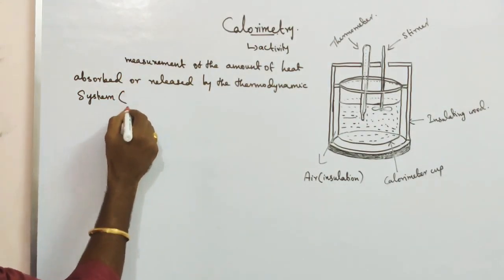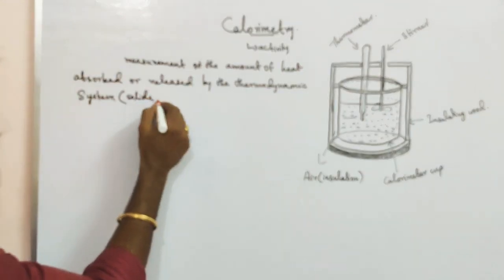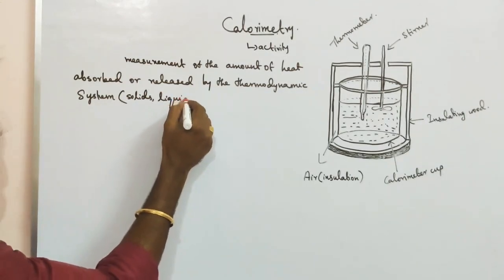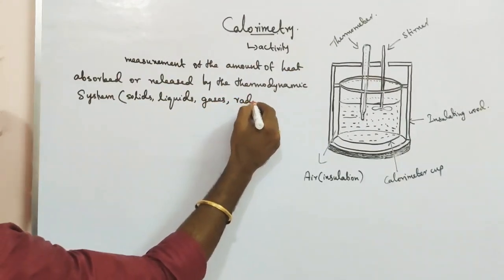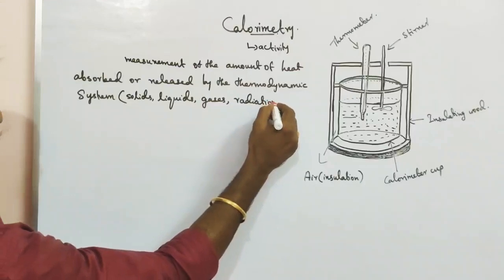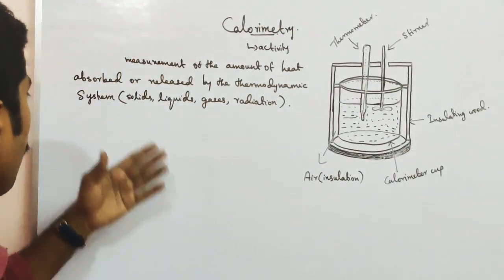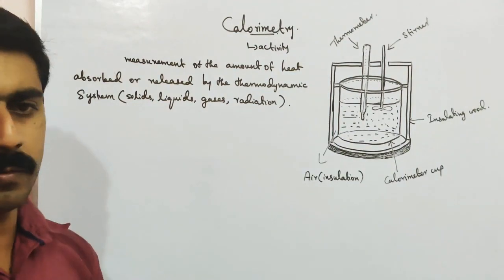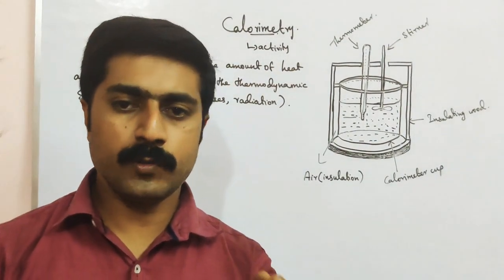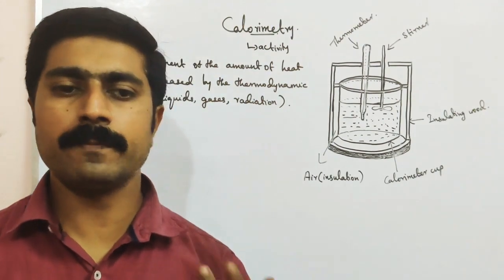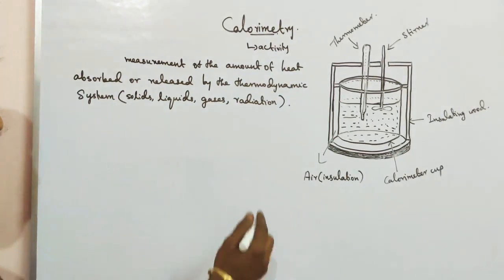Thermodynamic system examples: solids, liquids, gases, and radiation. The thermodynamic system can absorb or release heat energy, and this is measured through calorimetry.